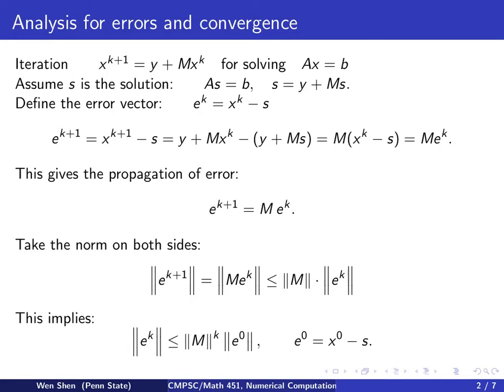By a simple induction step, we may conclude that the error at iteration number k is bounded by the M norm to the power k times the initial error, where the initial error is x^0 minus S. We now see that the norm of the coefficient matrix M becomes crucial. If this is strictly less than 1, then we'll be guaranteed convergence.